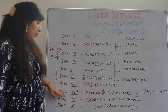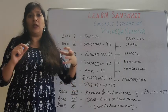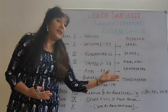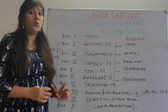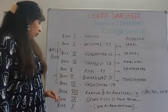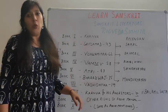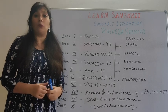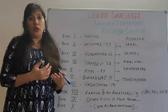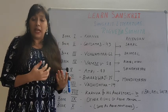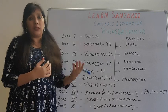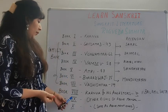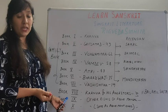One thing to note is that in book eight we have a Parishishtha — an appendix of sorts — called the Balkhilya suktas. There are 11 Balkhilya suktas in book eight. Book nine is devoted to Somras or god Soma. Soma is actually a juice extracted from a plant which is offered to God for sacrifice, and it is said that at that time Indians as well as Iranian people used to consume this Somras or Soma juice.